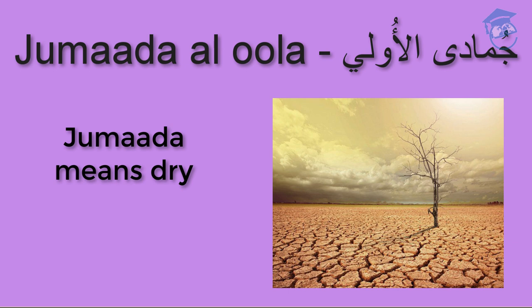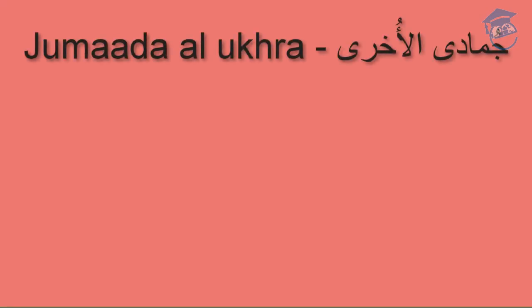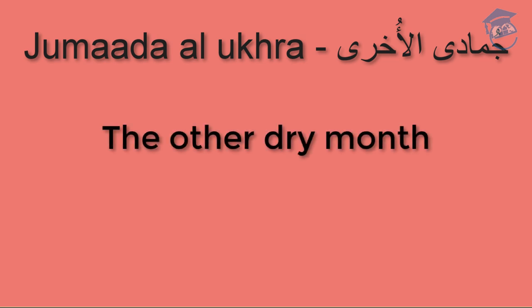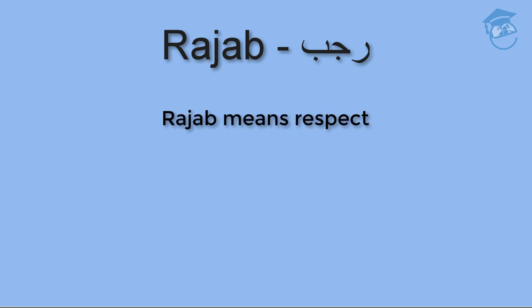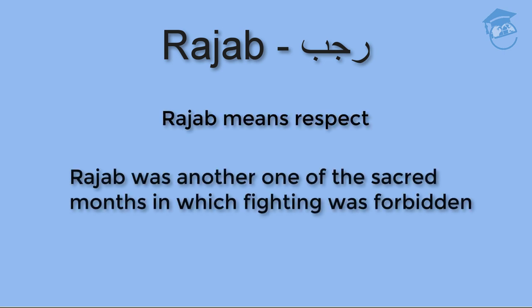The sixth month of the Islamic year is Jumada al-Ukhra. Literally, it means 'the other dry month.' The seventh month of the Islamic year is Rajab. Rajab means 'respect.' Rajab was another one of the sacred months in which fighting was forbidden.